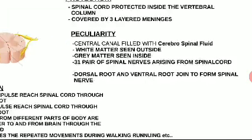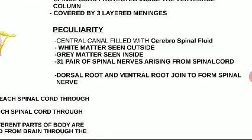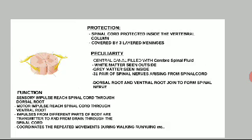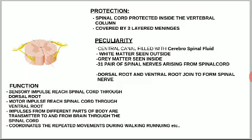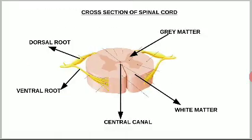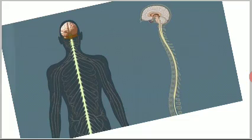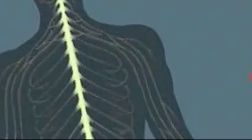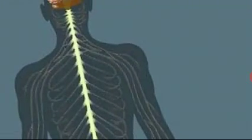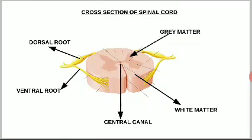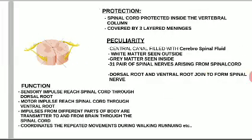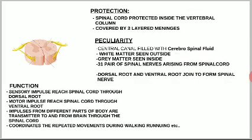There are 31 pairs of spinal nerves arising from the spinal cord. You can see the figure showing these nerves — 31 pairs of nerves arise from the spinal cord. Now let us see how these nerves are formed.